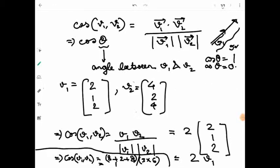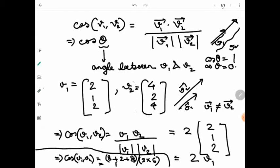From cosine similarity these two vectors are considered absolutely similar because the maximum value is 1. But is this really so? We cannot say V1 vector is equal to V2 vector, because magnitude-wise they are not equal. The main disadvantage of cosine similarity is that it does not take the magnitude of the two vectors into account — it only concentrates upon the direction or sense of the two vectors.